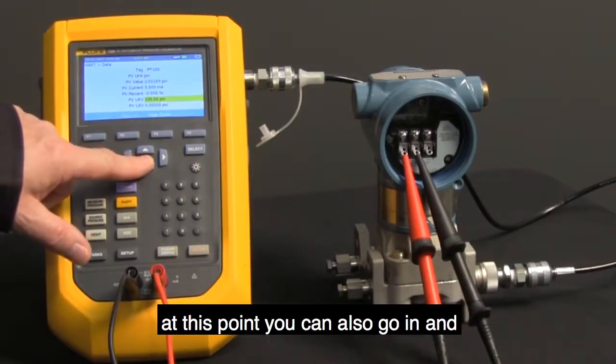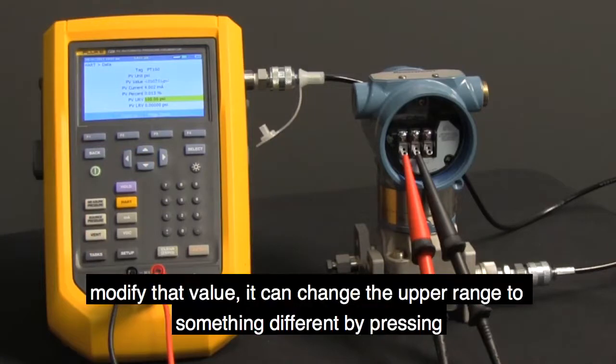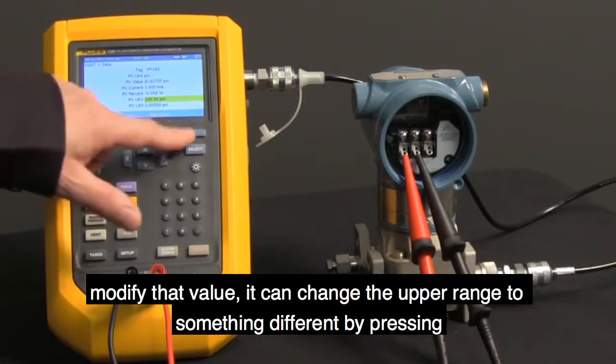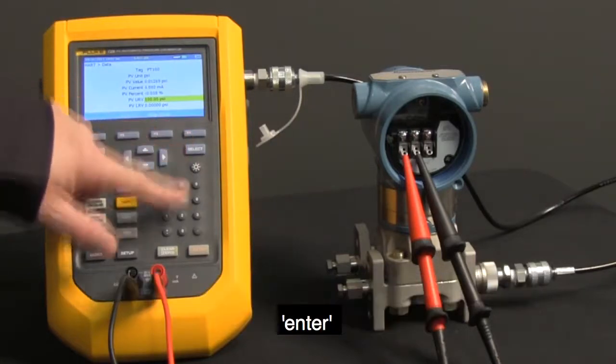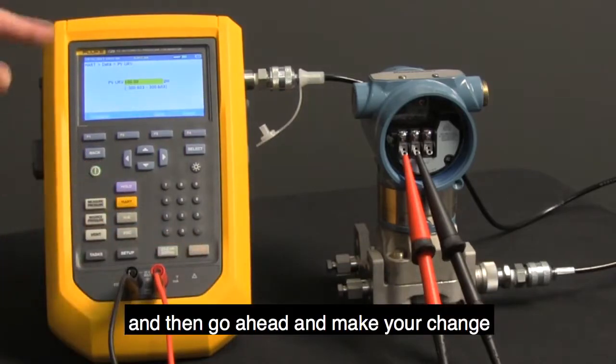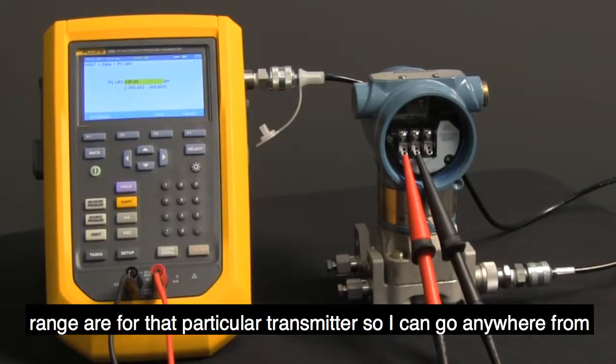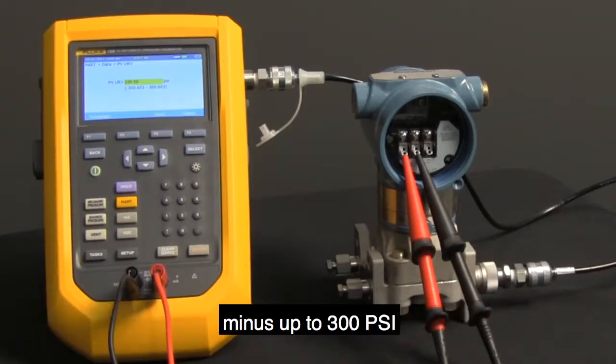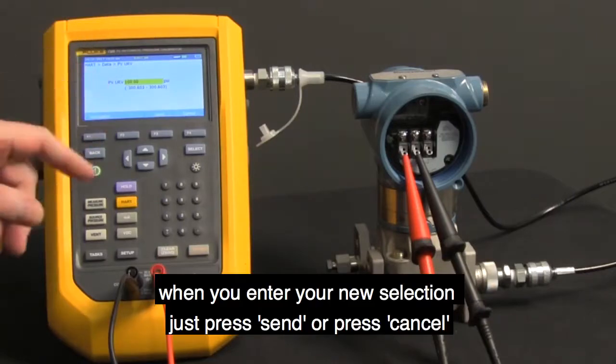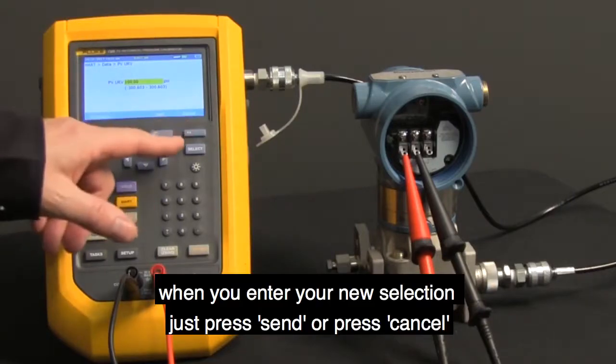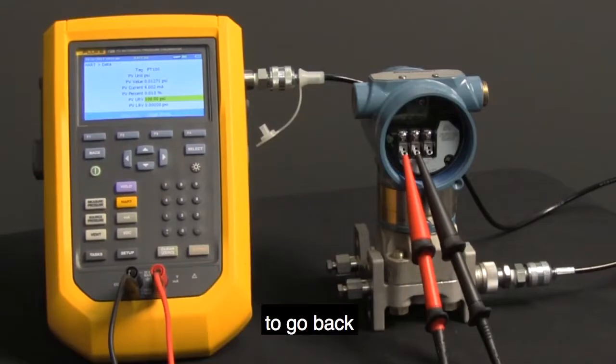At this point, you can also go in and modify that value. It can change the upper range to something different by pressing enter, and then go ahead and make your change. Notice, down below, it is showing you what the default values range are for that particular transmitter. So I could go anywhere from minus to up to 300 psi. When you enter your new selection, just press send or press cancel to go back.